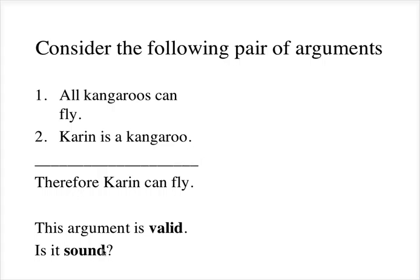So we can see that this argument shows that it's possible to have all false premises and still be a valid argument. It has all false premises, and it happens to also have a false conclusion. In the penguin argument coming up, I will show an argument where all the premises are false, but the conclusion is true.